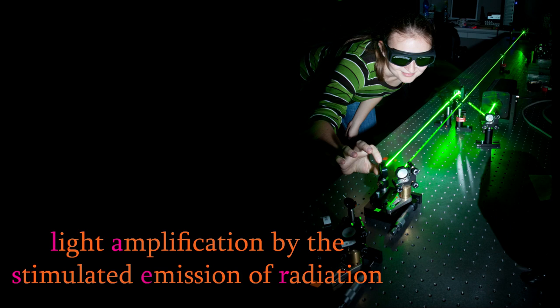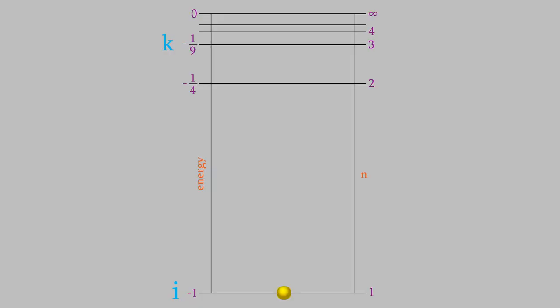The third process that results in an electron changing its energy level is absorption, which you're already familiar with. In absorption, the electron starts at a low energy level I, and it moves to a higher energy level, we'll call K.